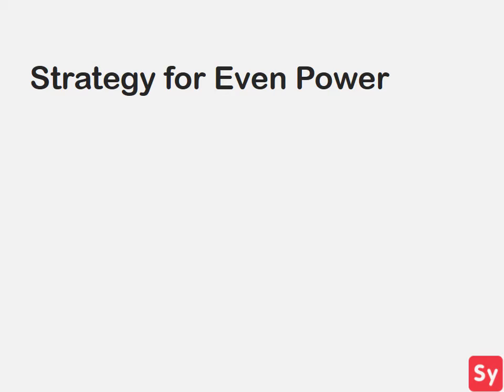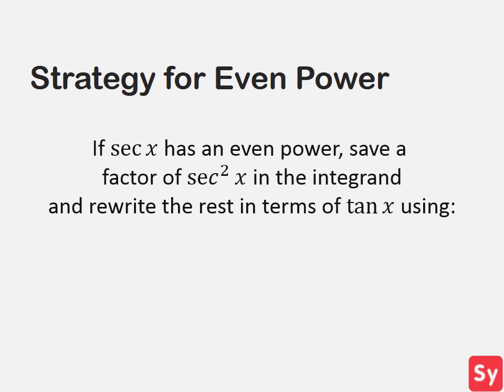Next we will learn how to solve these integrals when secant of x has an even power. In this case we pull out and save a factor of secant squared of x, and then rewrite the rest in terms of tangent of x using this trig identity.